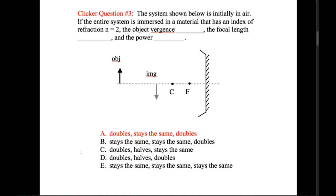Conceptually, changing the index of refraction changes how waves travel — their curvature changes — which affects vergence and power since those deal with wavefronts. The focal length is purely determined geometrically relative to the center of curvature. No matter what medium the mirror is in, the focal point remains the same because we're not physically bending the mirror. So focal length does not change with the medium, but vergence and power both do.